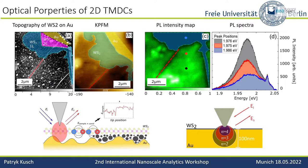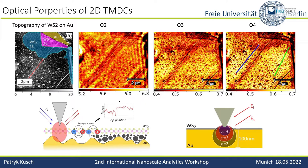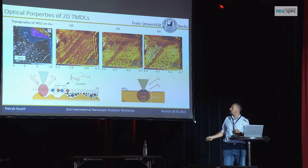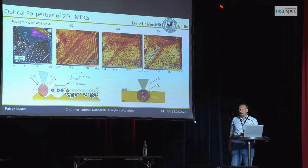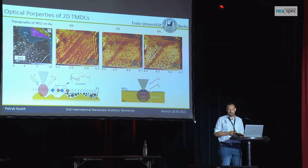Now the question is: can we use SNOM to reproduce this? Of course we can. We take a map at 633 nanometer excitation, and very nicely see this darker area that corresponds to where the tungsten disulfide is stuck to the gold. Where the tungsten is away from the gold, we see how the contrast changes. This is obvious because quenching involves doping, and doping influences the dielectric function — and what you measure in SNOM is proportional to the dielectric function.